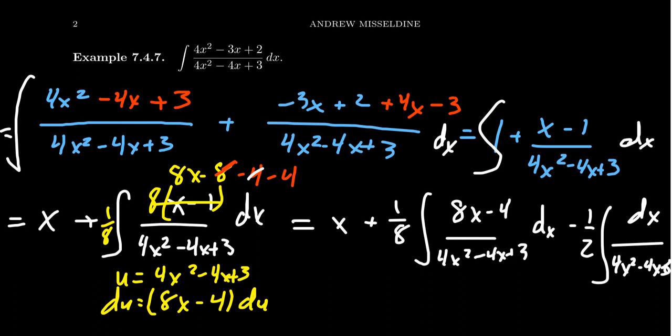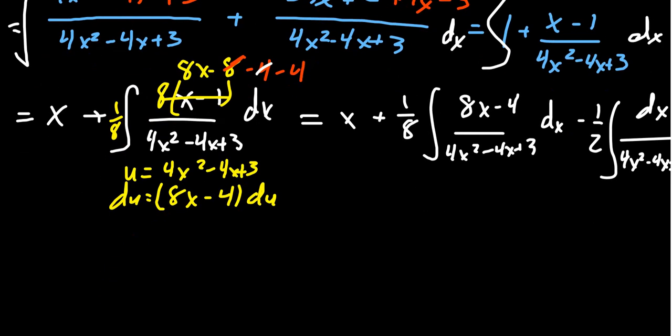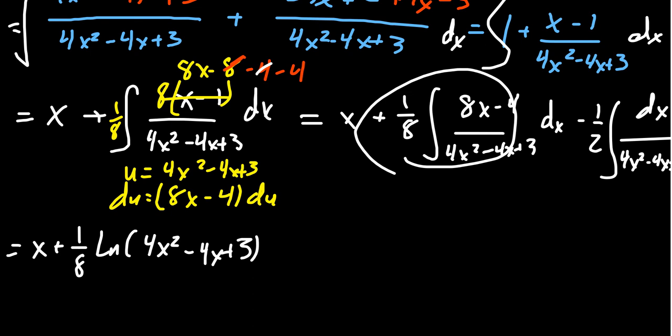This second integral, we know exactly what to do with it now. You're going to get just 1/8 times the natural log of the absolute value of 4x squared minus 4x plus 3. Turns out we don't need absolute value since the thing is always positive.